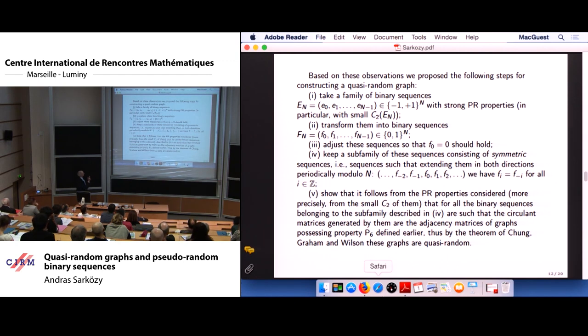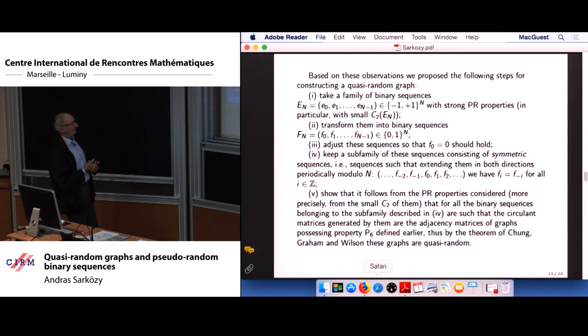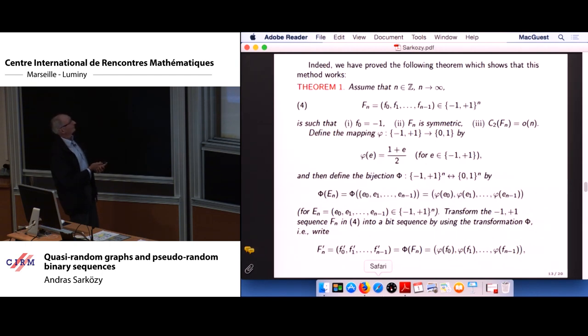Finally, we have to show that if all these properties hold, then it follows from the pseudo-random properties required, in particular the one in the first requirement. Then these pseudo-random properties imply that for the sub-family described in the fourth requirement, the symmetry, so we need this symmetry requirement. So these are the two important properties, the symmetry and the small c_2. If these two important things hold, and the rest is rather trivial, then for all the binary sequences belonging to the sub-family described in this fourth requirement are such that the circular matrices generated by them are the adjacency matrices of graphs possessing property P6 defined earlier, thus by the theorem of Chung-Graham and Wilson, these graphs are quasi-random. So this is the method, the principle, how to construct quasi-random graphs.